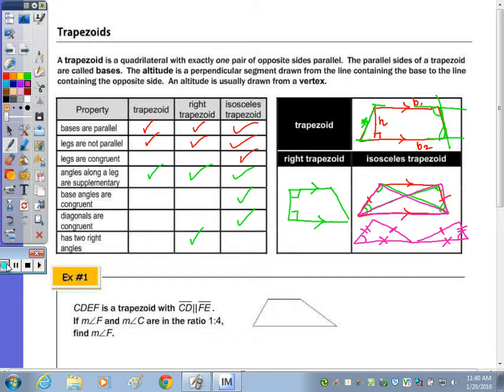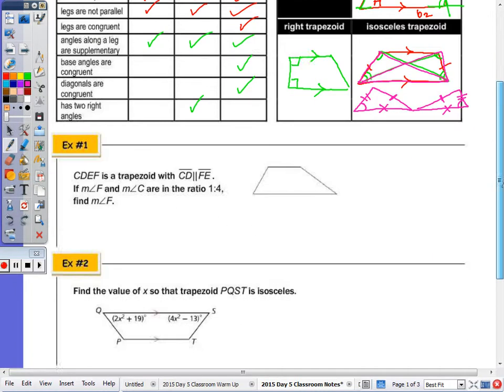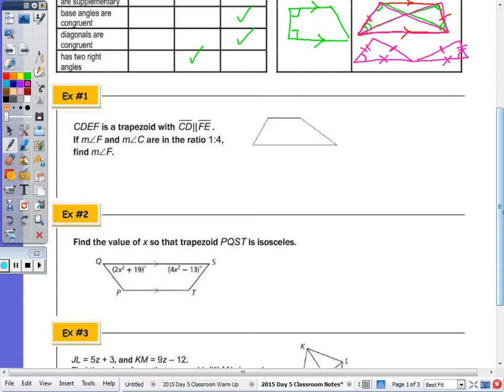We have a trapezoid with CD parallel to FE, so that should help us label the triangle. So let's put on our vertices. CD is parallel to FE, and it's CDEF. If the measure of angle F and C are in the ratio one to four, so that means F and C respectively would be X and 4X. Those two angles are along a leg, or one of the non-parallel sides, and any time that happens, they are supplementary.